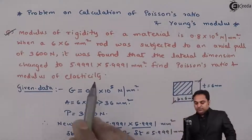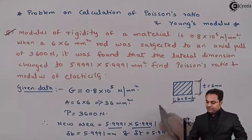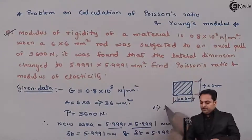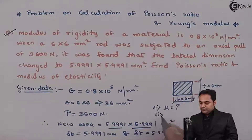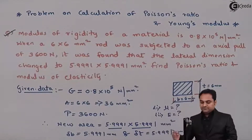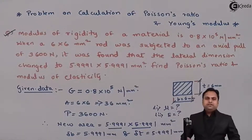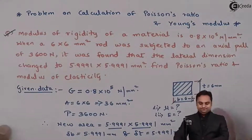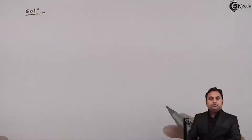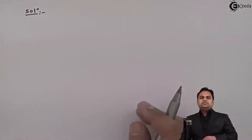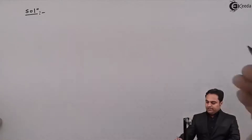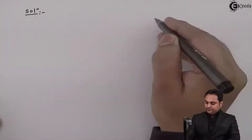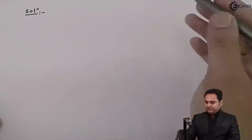We need to find Poisson's ratio and modulus of elasticity. So in this question, I have to calculate the value of mu, that is Poisson's ratio, and how much is the modulus of elasticity. With these data available, let us try to get the solution. As load and area are given, first I will get the value of stress.